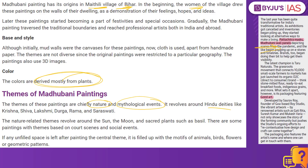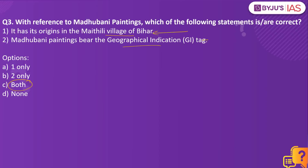It revolves around Hindu deities like Krishna, Shiva, Lakshmi, Durga, Rama and Saraswati. It also has nature-related themes like the sun, the moon and sacred plants. Historically this was restricted to a specific region, but now with evolvement, this painting has evolved as a modern painting as well, reaching more professional artists in India and abroad. It is a gift of India from the state of Bihar, and it has been accorded the GI tag. Which is why both the options are right and the answer would be both.